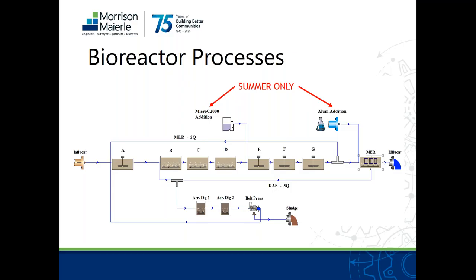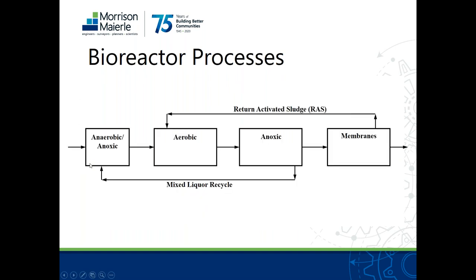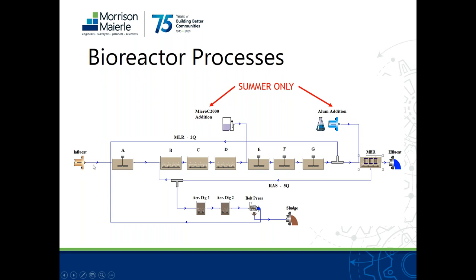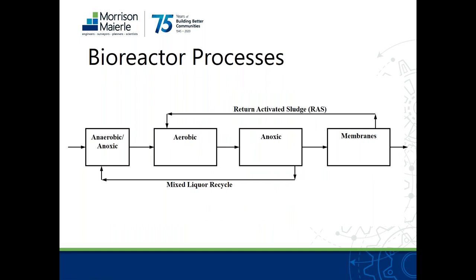From the bioreactor, flow continues to the membranes. Each process train has seven cells: the first one is not aerated, then there are three aerated cells, followed by three non-aerated cells, and then flow continues to the membranes in the next building. There are two points of possible chemical addition — one between the aerated and non-aerated zone, and one just before going to the membranes.